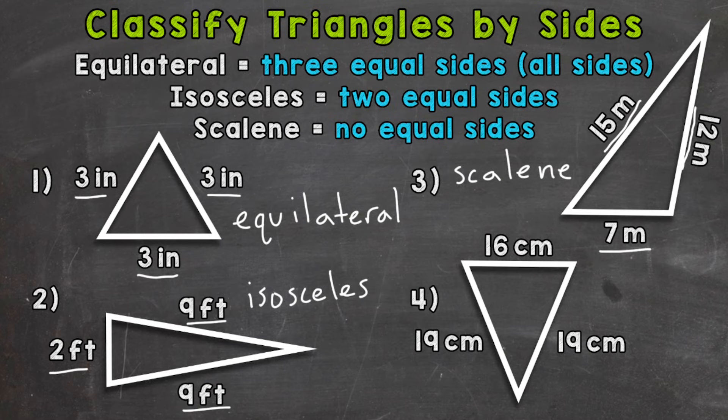And then lastly, number four, we have 16 centimeters up top and then 19 centimeters and 19 centimeters. So that's another example of an isosceles triangle.